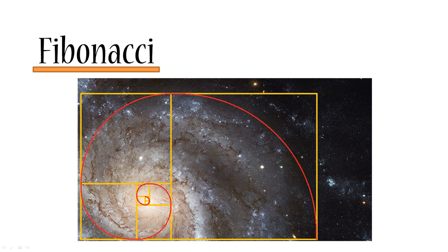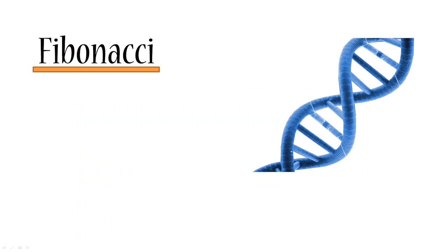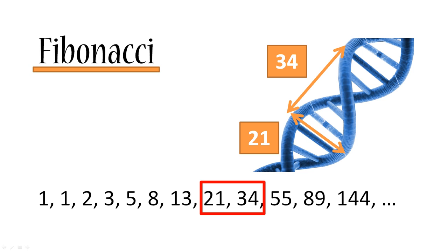So it kind of makes you wonder how come the Fibonacci ratio can be seen in so many parts of nature. Let's take one more example. Let's take the human DNA, and if we measure its width and its length, then they will be exactly 21 angstroms and 34 angstroms, where angstrom is a unit of measurement for various little things. And if you recall, 21 and 34 are actually in our Fibonacci sequence.